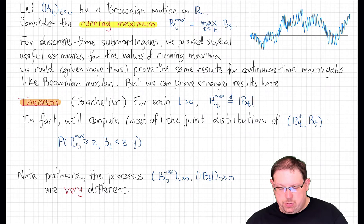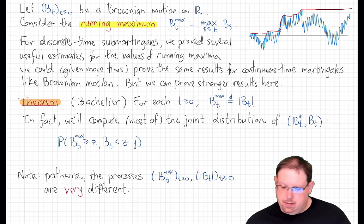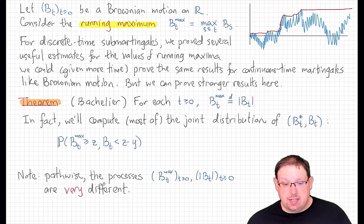For example, if this is a Brownian path, then the running maximum looks like this. As you can see, its path properties are quite different from Brownian motion. It will have long horizontal stretches, and of course it is non-decreasing, which means it is differentiable almost everywhere. So it looks quite different from Brownian motion.